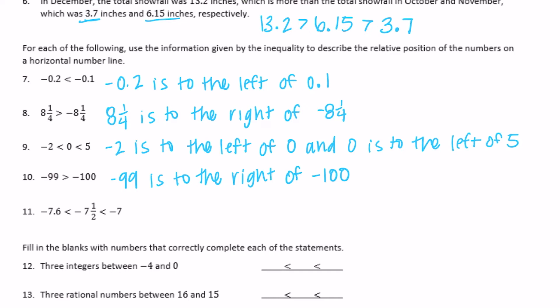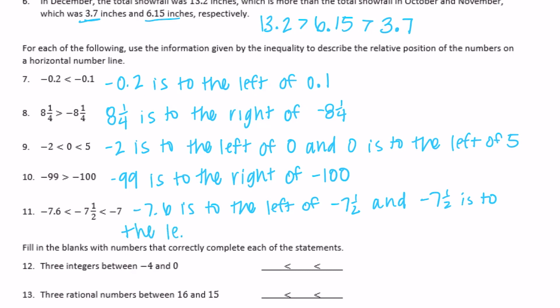Negative seven and six tenths is less than negative seven and a half, which is less than negative seven. So negative seven and six tenths is to the left of negative seven and a half, and negative seven and a half is to the left of negative seven.